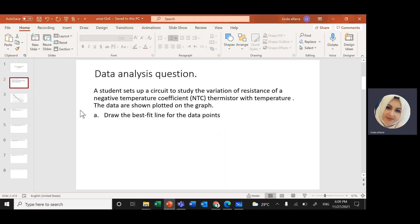And this is question number six. We have a student to set up a circuit to study the variation of resistance of a negative temperature coefficient thermistor with temperature. The data are shown plotted on the graph. First, draw the best fit line for the data points.